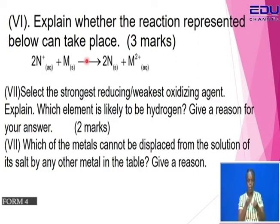Select the strongest reducing agent or the weakest oxidizing agent. Explain which element is likely to be hydrogen and give a reason for your answer. Determine which of the metals cannot be displaced from the solution of its salt by any other metal in the table and give a reason.